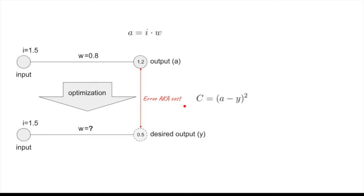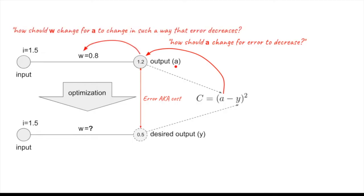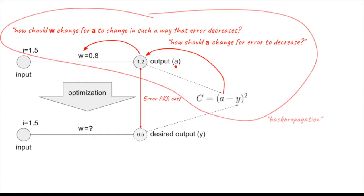The mean squared error is simply the difference between the output and the desired output, squared. Since the error function is affected by the output activation, we have to ask how A should change for error to decrease. Since we cannot directly change the output activation, we go one step further and ask how the weight should change for A to change in such a way that error decreases. This whole process of backtracking through the network is called backpropagation.